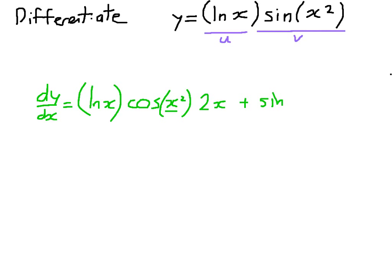Plus the second, which is the sine of x squared, times the derivative of the first. The derivative of the natural logarithm of x is 1 over x.